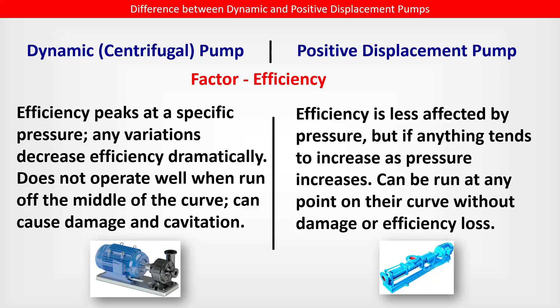Factor: efficiency. In the centrifugal pump, efficiency peaks at a specific pressure; any variations decrease efficiency dramatically. It does not operate well away from the middle of the curve and can cause damage and cavitation. In the positive displacement pump, efficiency is less affected by pressure and tends to increase as pressure increases. It can be run at any point on the curve without damage or efficiency loss.